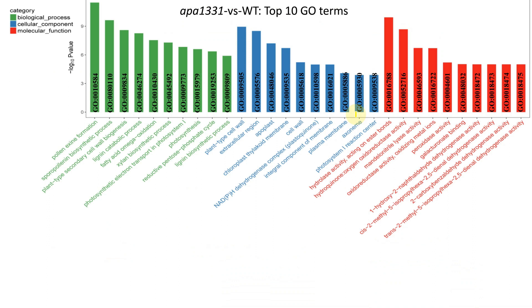Now let's try to understand how we can interpret the results of gene ontology analysis. You have often seen these types of figures in many research articles, but students are confused about how to write the results of GO term analysis. Here you can see this figure shows APA1331 versus wild type — the wild type is the control. This is actually a comparison of two treatments showing only the top 10 gene ontology terms.